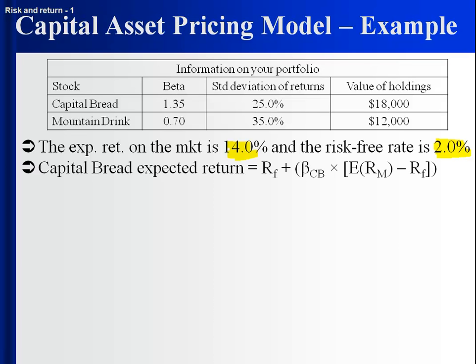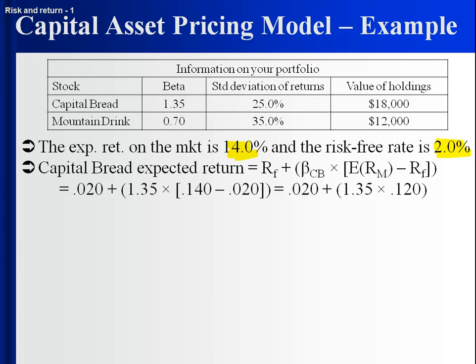What is the expected return of Capital Bread? Let's apply the CAPM. We would get 2% if there was no risk at all. But if there was an average amount of risk, we would get an extra 12%. Why? Because the expected return on the market is 14%, the risk-free rate is 2%, so if you took on an average amount of systematic risk associated with the market, you would get 12 percentage points extra above and beyond the 2%.